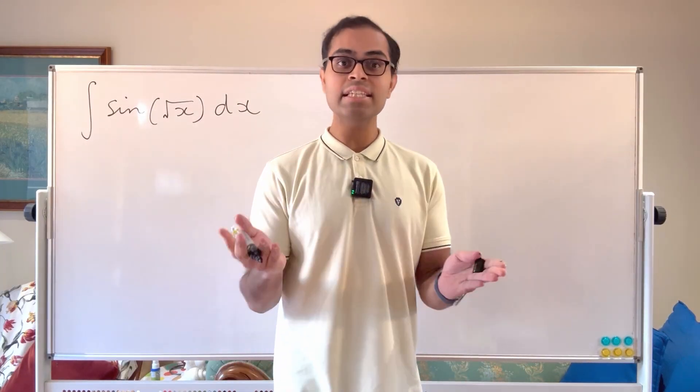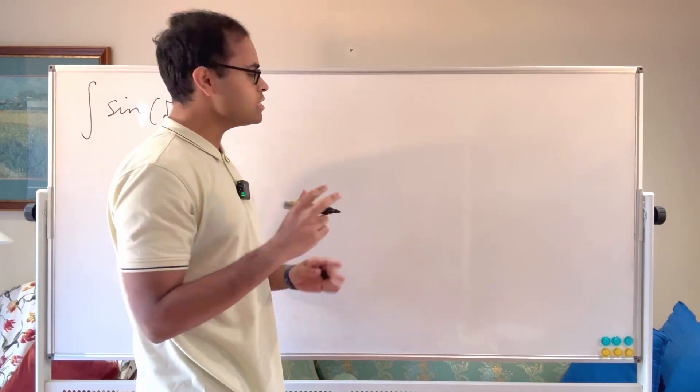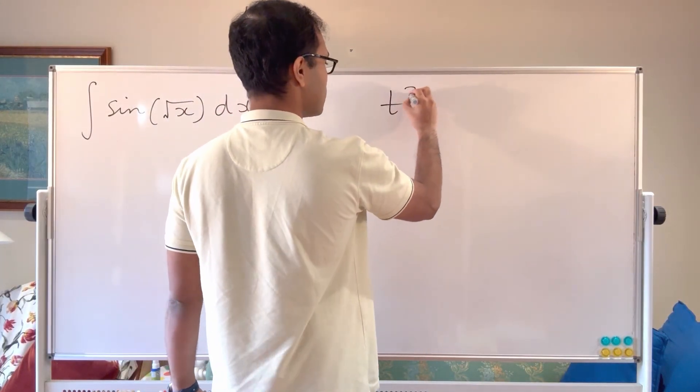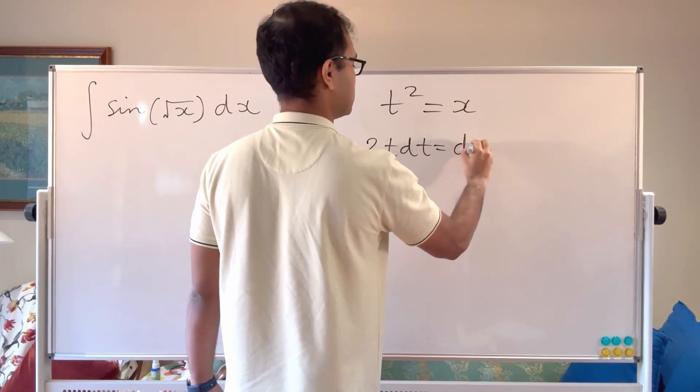We're going to call it a t substitution, not a u substitution, just using the letter t for convenience at the moment. What I'm going to do is write t squared equals x so that 2t dt is going to equal dx.